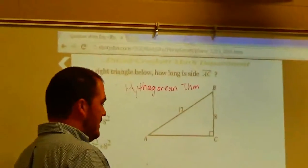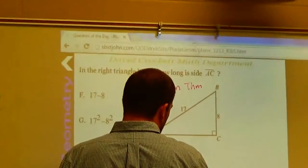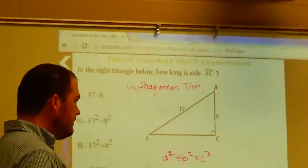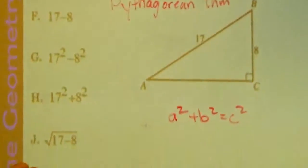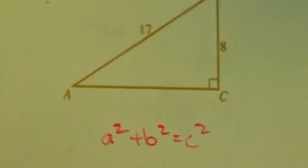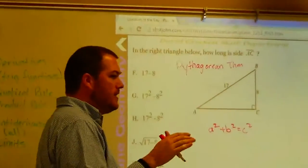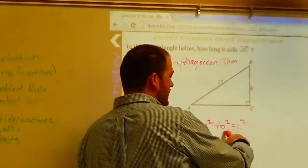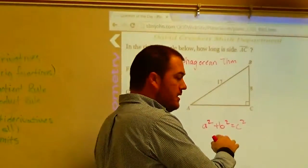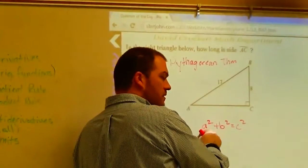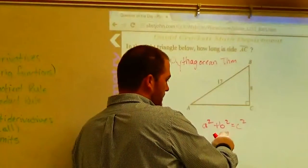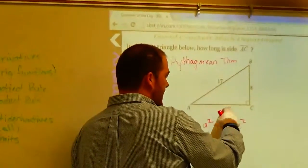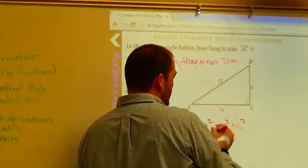Alright, so what that says is a squared plus b squared equals c squared. So in any right triangle — it doesn't matter what it is — this is the ratio of the sides. So what this says is a squared, one of the legs plus the other leg equals the hypotenuse. It doesn't matter which letter you use for a or c — I'll just put a.